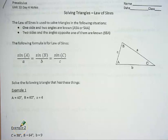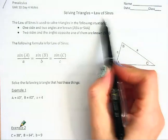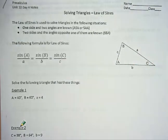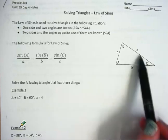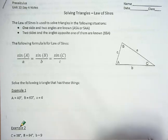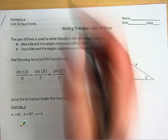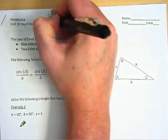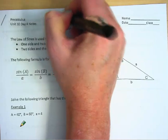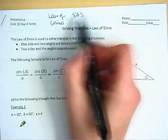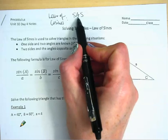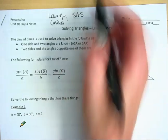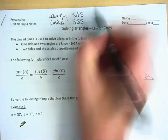Yesterday we did a lesson on Law of Cosines, and today we're going to do a lesson on Law of Sines. Both of these sets of formulas are for finding missing side and/or angle measures from a given triangle that's not a right triangle. Law of Cosines was for situations where we had two sides and the included angle — side-angle-side — or where we had all three sides given.